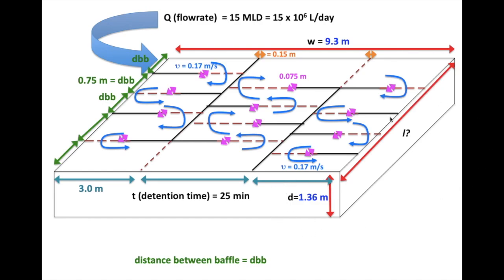Now, our task is to find the length of the flocculation tank. If we know the number of channels in a compartment, we should be able to find the length.